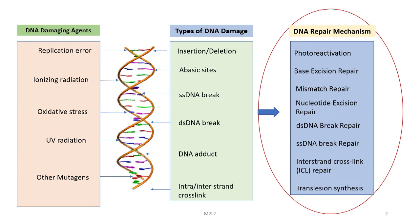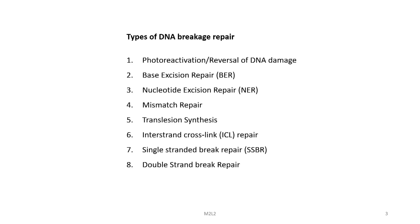This figure is now familiar to you. We spoke about the DNA damaging agents in the last lecture and how they create different types of DNA damages. Now, once the DNA damage has been inflicted, there are several DNA repair mechanisms inside the cell which take care of the broken DNA. If this DNA is left unrepaired, it will lead to mutagenesis and cause several genetic disorders. So what are the different types of DNA breakage repair systems inside the cell?